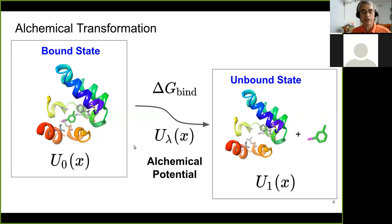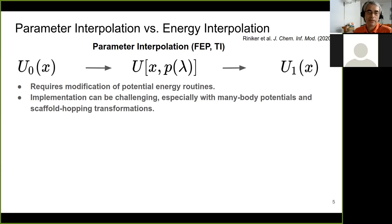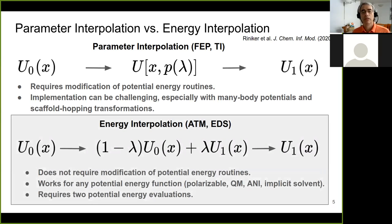The approach is based on the general idea of an alchemical transformation that changes a potential function. It connects the potential function related to the bound state to that of the unbound state through an alchemical potential. What's different — or rather, what distinguishes this from free energy perturbation or TI — is that instead of the alchemical interpolation being done by parameter interpolation (modifying parameters in the potential energy function with dummy atoms or soft core pair potentials), the transformation is done by energy interpolation. ATM uses energy interpolation, so the lambda dependence is outside the energy routines — that's why the energy routines don't need to be modified.